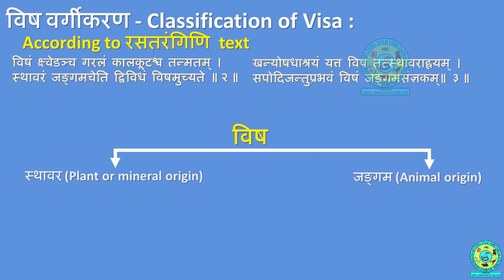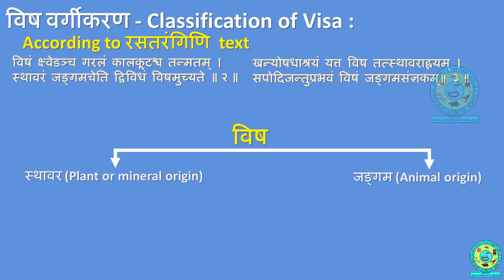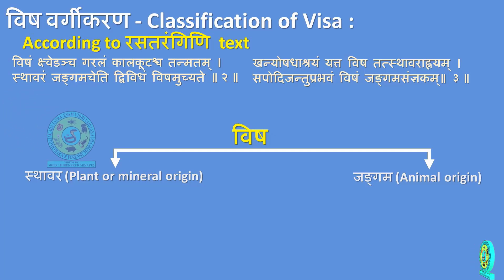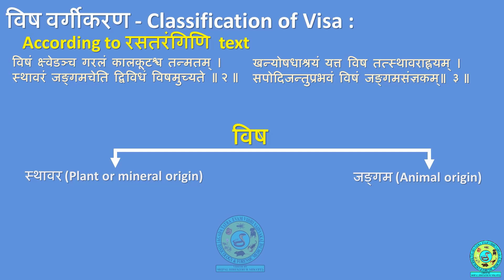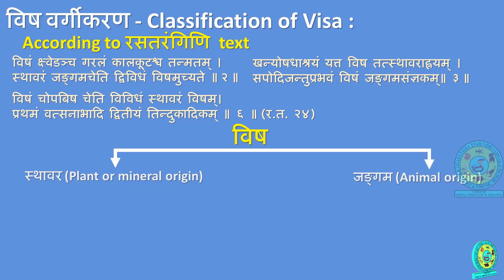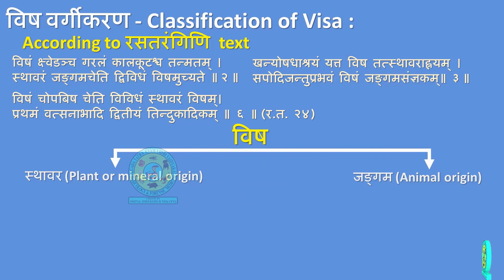Rasatarangini Shloka 3: 'Vanya Aushadhaashrayam Yattu Visham Tats Thavaraahoyam. Sarpadi Jantuprabhavam Visham Jangama Sanyakam.' Drugs present in Vanya Aushadhi, i.e., herbal drugs, are termed as Sthavara Visham, while Vishah obtained from Sarpadi Jantu or animals is called Jangama Visham. Rasatarangini further classified Sthavara Visham into two types: Mahavisham and Uppavisham.